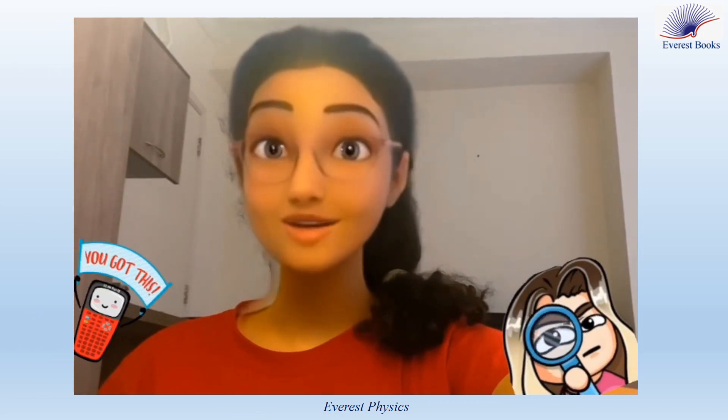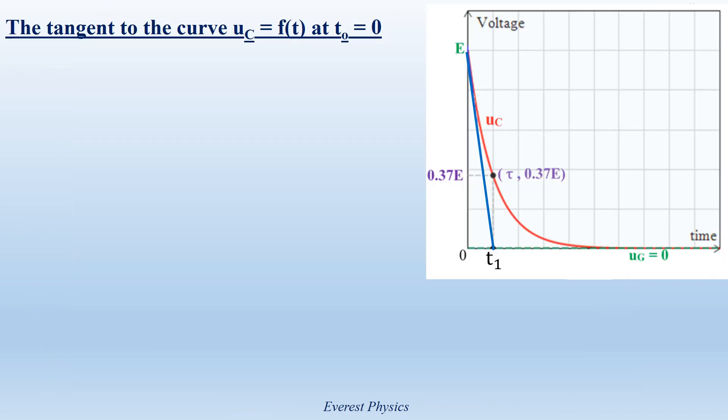Please focus — this is important. This figure shows two curves. The red curve represents UC as a function of time during the discharging, and the blue curve represents the tangent to UC at T equals 0. We observe that this tangent cuts the asymptote of equation U equals 0 at a point of abscissa T1. To prove that T1 equals tau, we have three steps: first, determine the slope using the expression of UC; second, determine the slope graphically; then prove T1 equals tau.